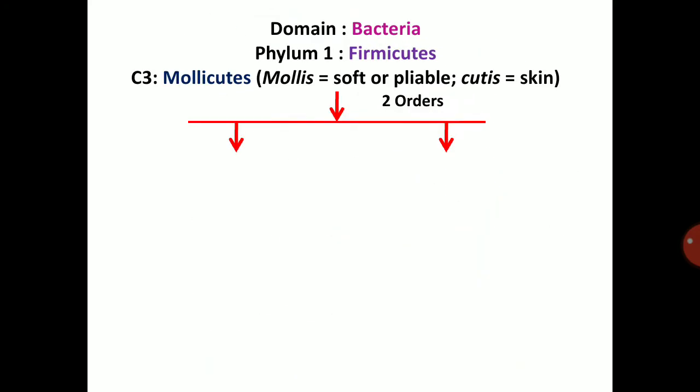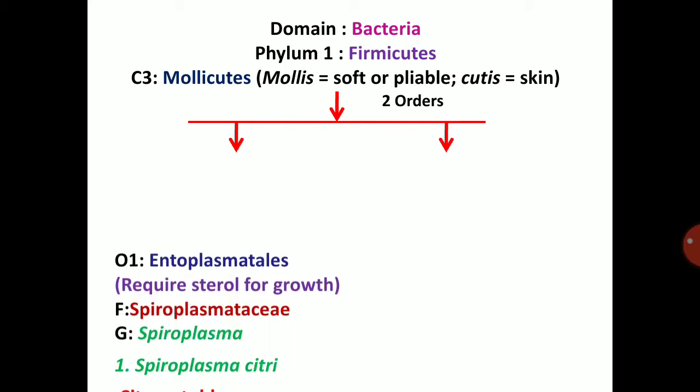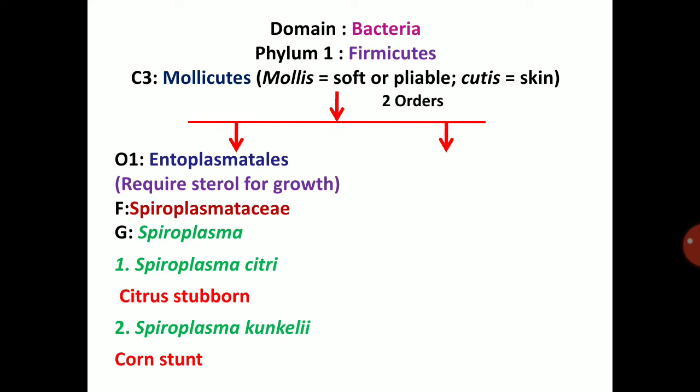First of all, Mollicutes. Mollicutes comes under Domain Bacteria, Phylum Firmicutes. Mollicutes means soft or pliable — 'mollis' means soft or pliable, 'cutis' means skin. Mollicutes means soft or wall-less bacteria. There are two important orders. First of all, Entoplasmatales — they require sterol for growth.